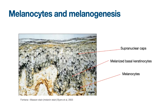Melanocytes are found between the cells of the stratum basale, along the basement membrane, and they produce melanin which is donated to neighboring basal keratinocytes. The ratio of melanocytes to keratinocytes is about one melanocyte per every five to six basal keratinocytes. Darker-skinned individuals don't have a higher ratio — they just produce more melanin per melanocyte. You can see melanocytes with their dendritic processes and adjacent melanized basal keratinocytes, and as you go into the higher layers, supranuclear caps form — melanin granules protecting the sun-facing side of the nuclei within the keratinocytes.